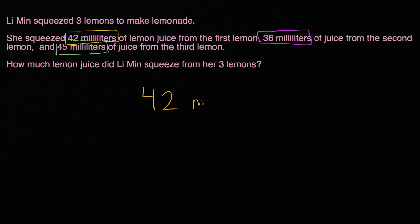And short for milliliters, I could write lowercase m for milli and then uppercase L for liters. 42 milliliters from the first lemon, 36 milliliters from the second lemon, and then 45 milliliters from the third lemon.